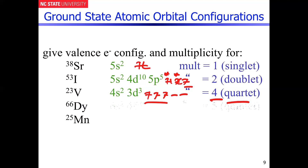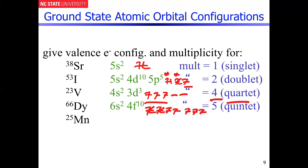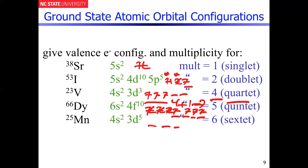Dysprosium (Z=66) has a 4f10 configuration. There are seven different f orbitals; filling them to 10 electrons leaves four unpaired electrons, so four plus one gives five — that's a quintet. Finally, manganese (Z=25) is 4s2 3d5. The best way to spread those five electrons out gives five unpaired electrons in a completely degenerate d-orbital set, and that gives a spin multiplicity of six — five plus one — which is called a sextet.